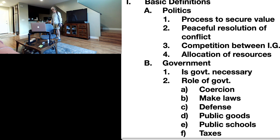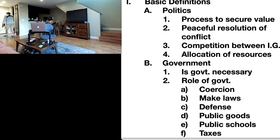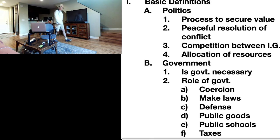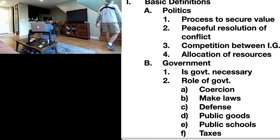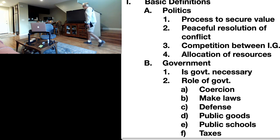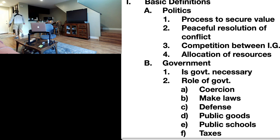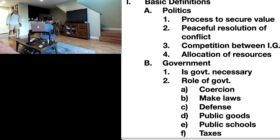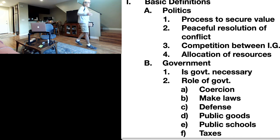The second definition of politics — number two on our outline: politics is the peaceful resolution of conflict. When politics becomes violent, we call it war. Peaceful resolution of conflict is politics.